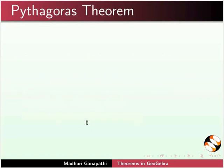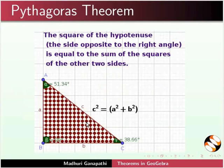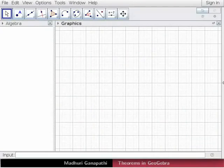Let us state the Pythagoras Theorem. The square of the hypotenuse is equal to the sum of the squares of the other two sides. I have already opened the GeoGebra interface.